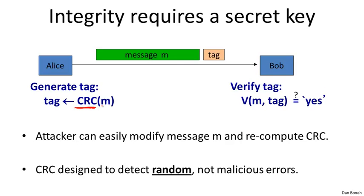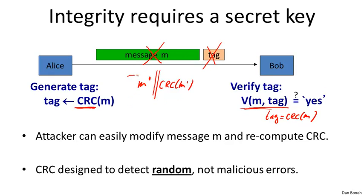Alice sends the message and CRC tag to Bob, who verifies that the CRC is still correct. The problem is this is very easy for an attacker to defeat. The attacker can intercept and block the message and tag, produce his own message M', compute his own CRC on M', and send that concatenation to Bob. Bob runs the verification algorithm, which succeeds because the CRC is valid for M'. As a result, Bob thinks the message came from Alice, but it has been completely modified by the attacker.